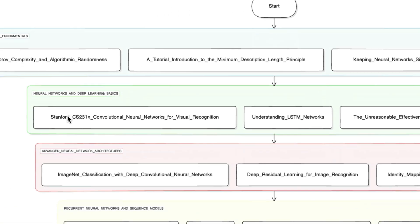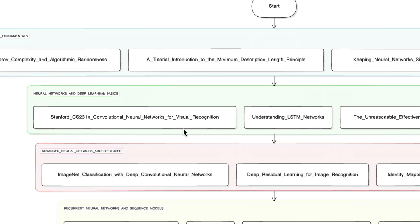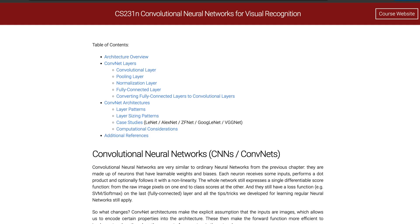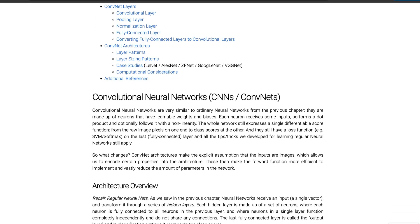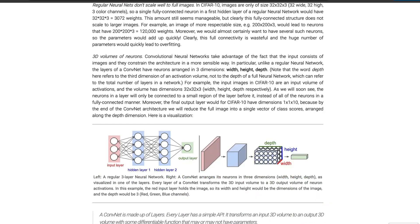Then we have Neural Network and Deep Learning Basics. Here you have to master the core concepts and architectures of neural networks and their applications. First, we have Stanford's Convolutional Neural Network for Visual Recognition, which will give you a comprehensive understanding of CNNs and their application in computer vision.